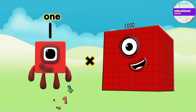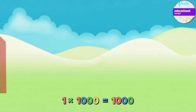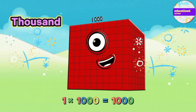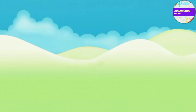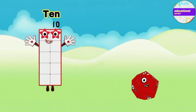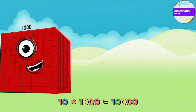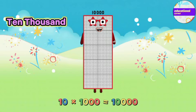One multiply by thousand equals one thousand. Ten multiply by thousand equals ten thousand.